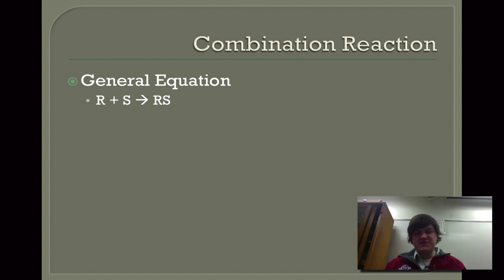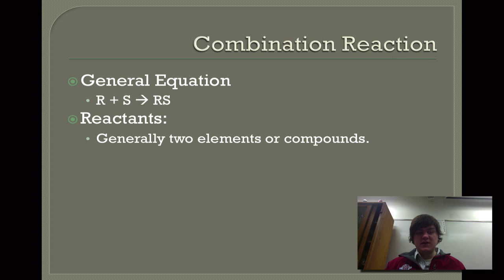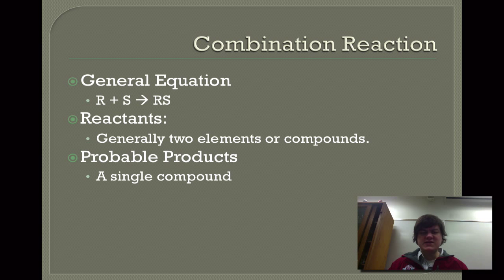The general equation for this, if you're going to write this in general form, it is R plus S yields RS. There are generally two elements or compounds, and that will be a way to identify these reactions when you're having to name what type of reactions something is. There will be a single product and generally two or more reactants.